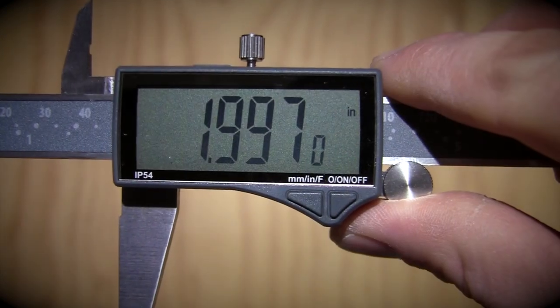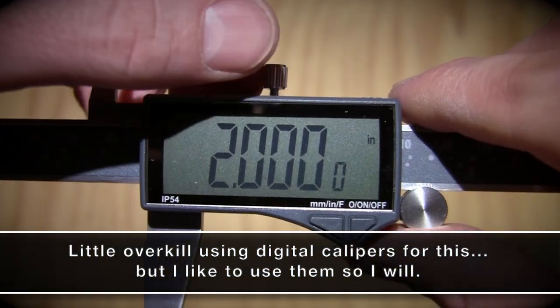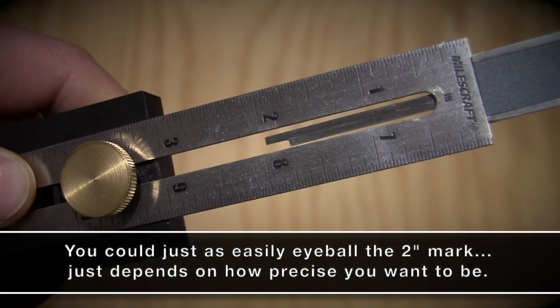I then set my digital calipers to 2 inches and lock that reading in. Using the depth gauge on the calipers, I set my exactor to 2 inches.